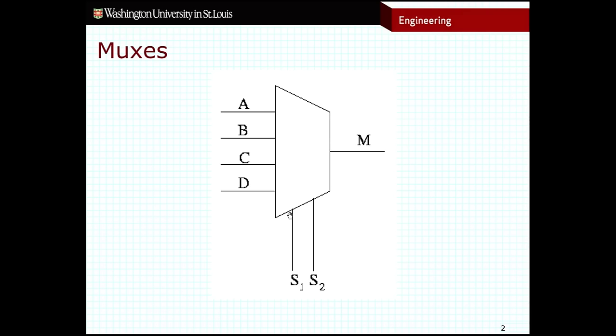You'll notice that for however many inputs I have, I need to have a certain number of select bits in order to choose across all of those different inputs. So in this particular example, I have two select inputs. The most I can represent with two bits of information is four inputs. If I were to have three bits of select inputs down here, I would be able to choose between eight different inputs on the left hand side.